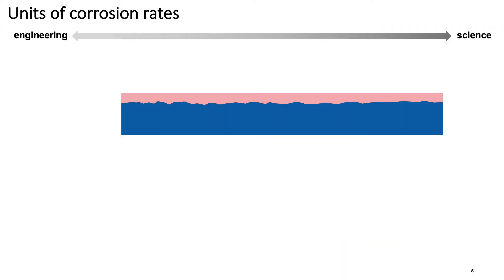Corrosion rates can be expressed in different units. In the engineering context, it's generally preferred to express corrosion rates in terms of loss of metal thickness over time, or sometimes as loss of weight over time.